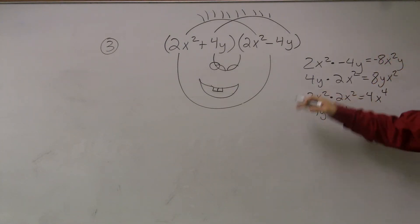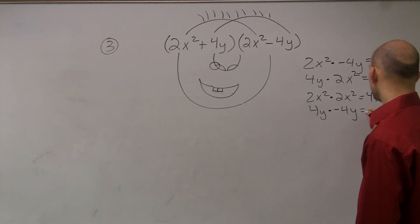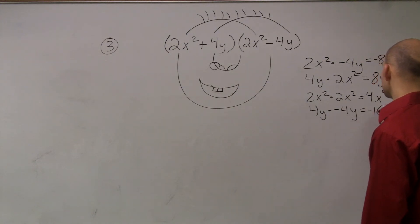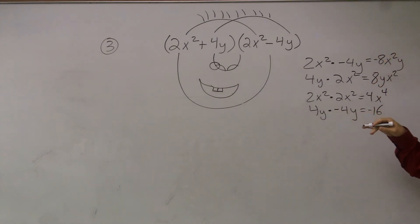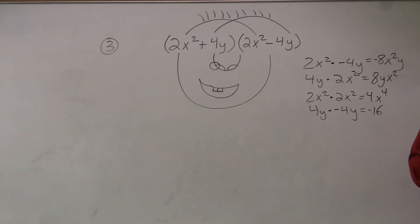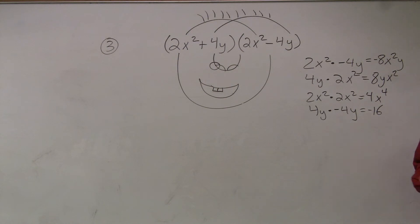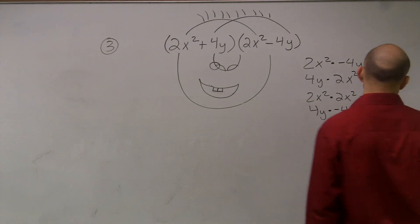Then here I multiply my numbers: 4 times negative 4 is negative 16. And y and y have the same base, so it's negative 16y. Y and y have the same base, and therefore you add the exponents — it becomes y².